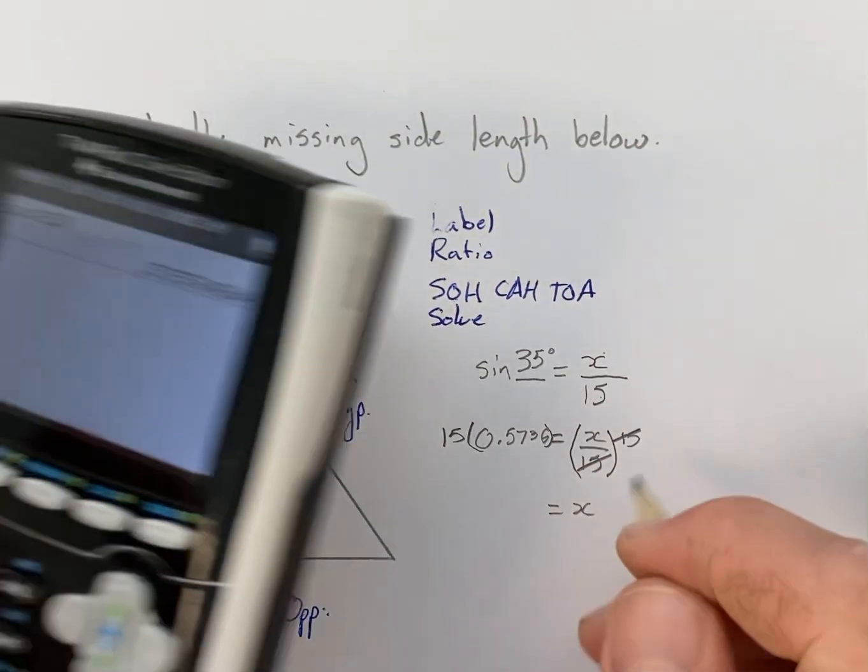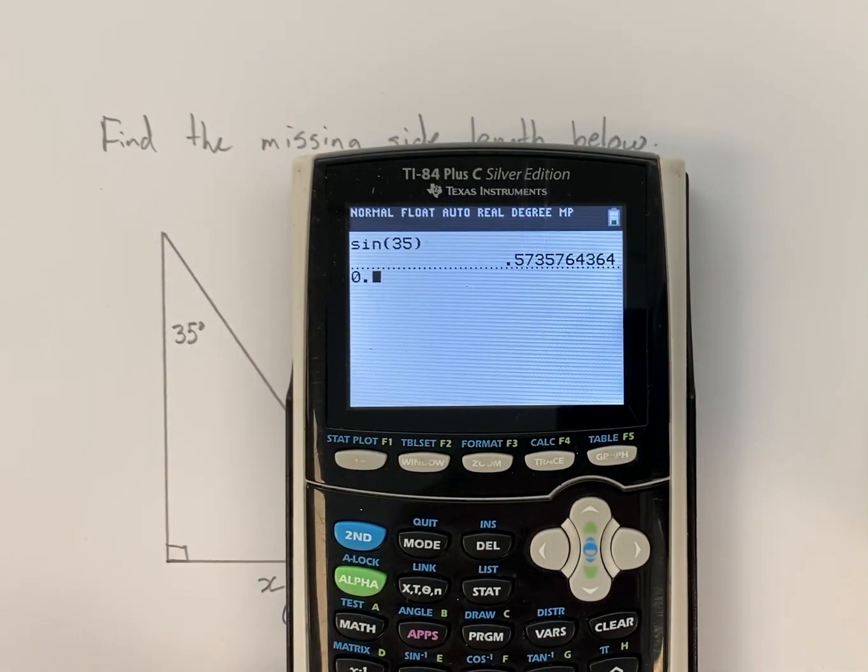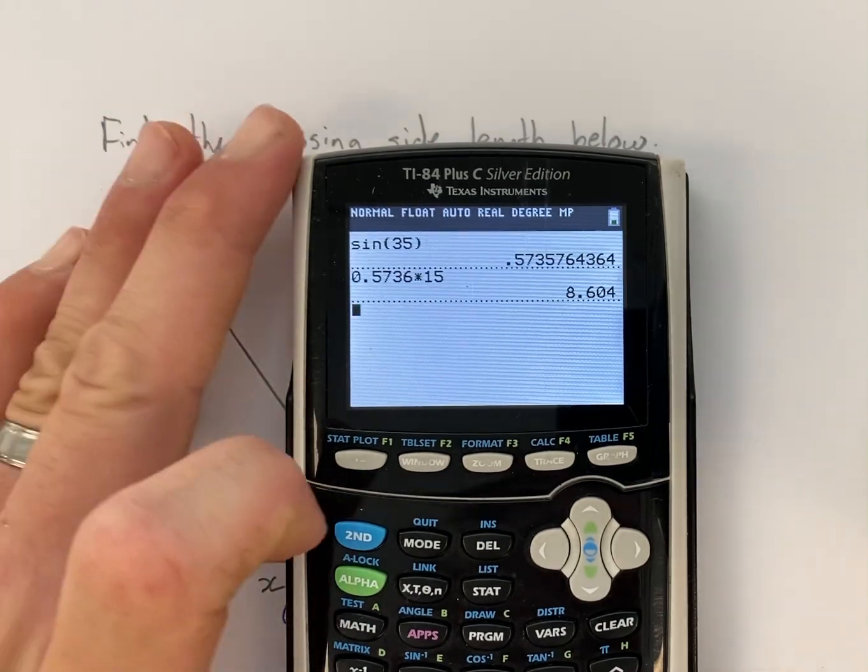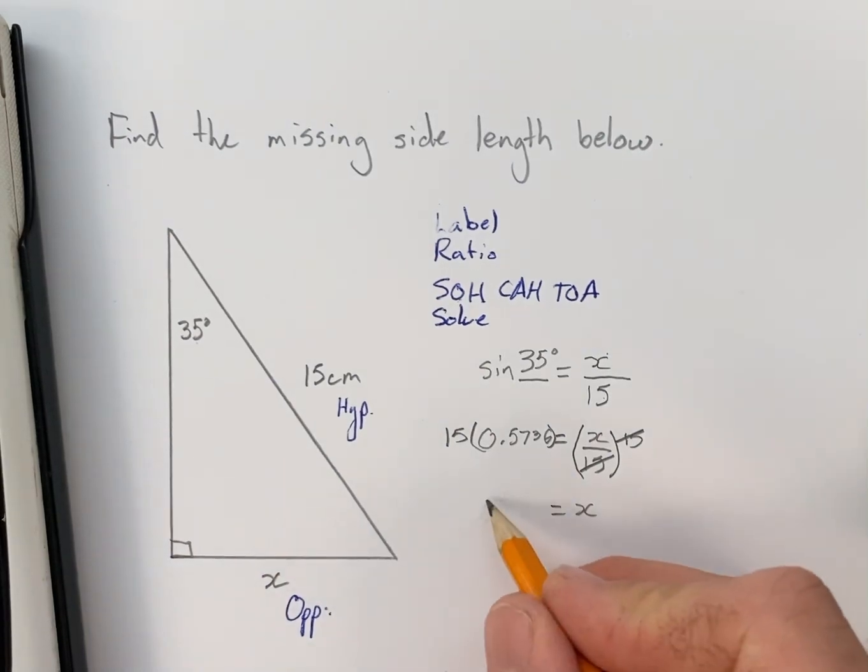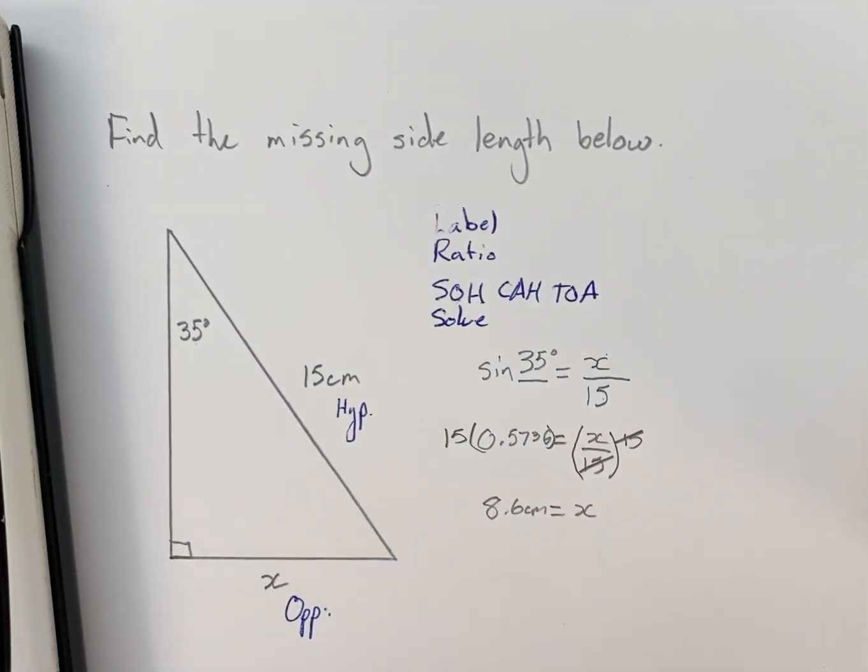We're left with just X on the right. And I'll take my answer 0.5736 and multiply by 15 on my calculator. I get 8.604, I'll keep that to the tenths. So 8.6 centimeters is the missing side length.